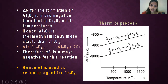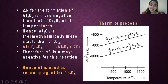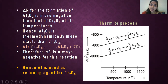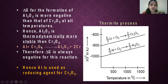During this reaction, the product side has aluminium oxide. Aluminium oxide is more stable when compared to chromium oxide. In this reaction, the less stable chromium oxide is a reactant and the product is the more stable aluminium oxide. Whenever the product is more stable, this reaction is more favourable. This reaction is thermodynamically feasible and has a ΔG value that is negative. Since ΔG is always negative, aluminium can act as a reducing agent for chromium oxide.